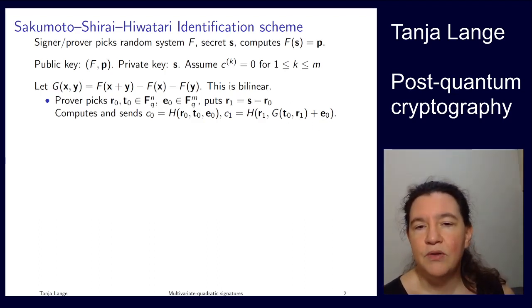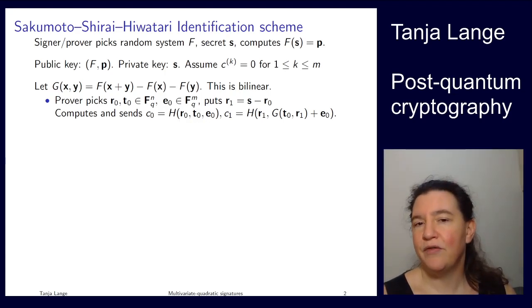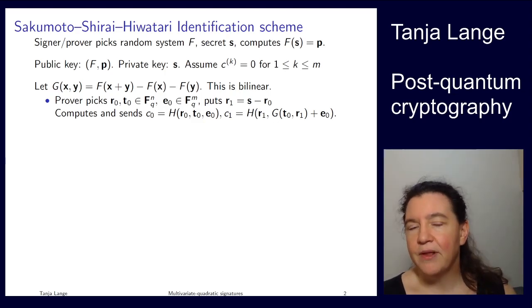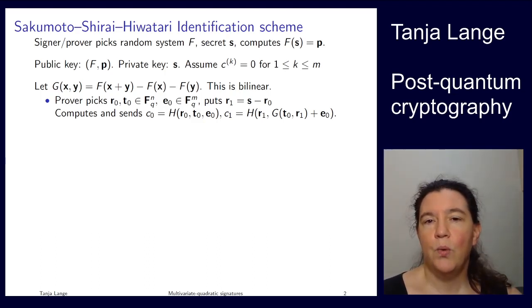I'm computing c_0 and c_1 as the outputs of the hash function. The first one is just these variables I just picked. And the second one includes this r_1, depending on s and r_0, and then some expression in the other variables. I'm using a hash function here because that has the feature or the property that if you would change anything on the inputs, the output would change. The only way that I can give you something that hashes to c_0 is by giving you exactly the inputs. The only way for me to give you something that hashes to c_1 is giving you exactly these two inputs.